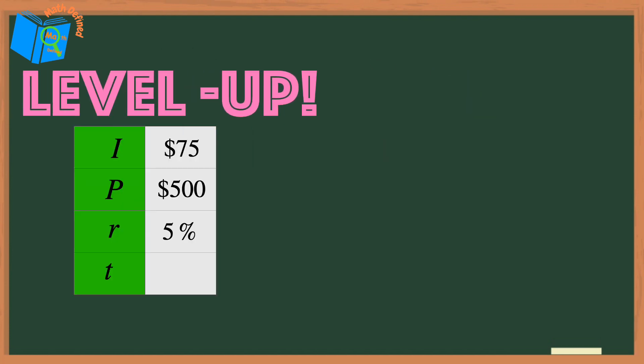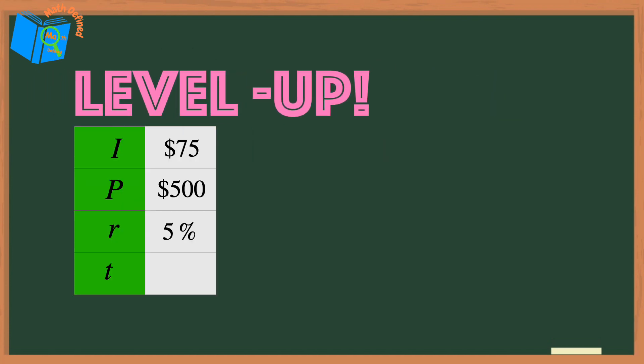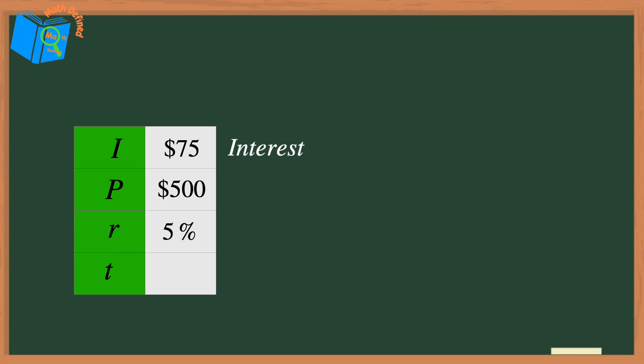Now let's level up our problem-solving capabilities. Here we have a table that describes a savings account. The i represents the interest earned on the savings account, or $75. P is the principal, or the balance in the account, which is $500. The r represents the rate, or the percent for the interest earned on the account, which is 5%. The t represents the amount of time in years, which in this case is what we need to solve for.